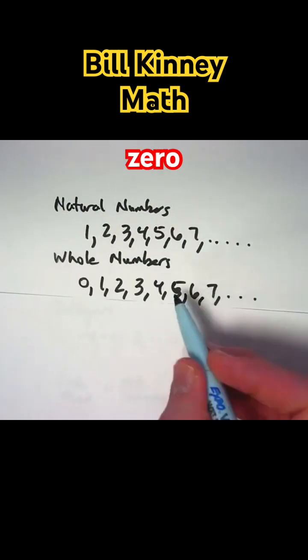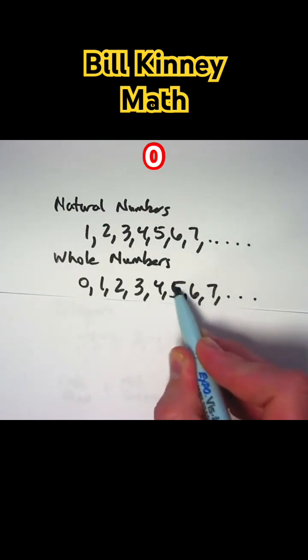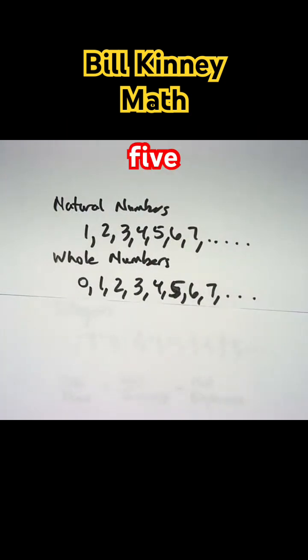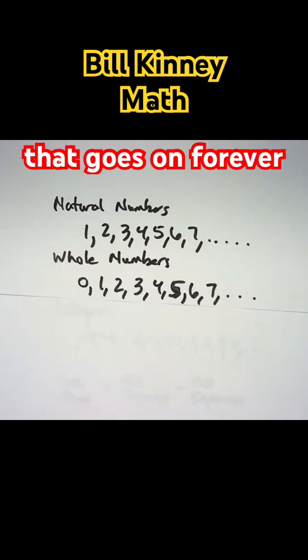If we do include 0, we call it the set of whole numbers: 0, 1, 2, 3, 4, 5, 6, 7, etc. This is supposed to be a 5 here. That would be the collection or set of whole numbers that goes on forever as well.